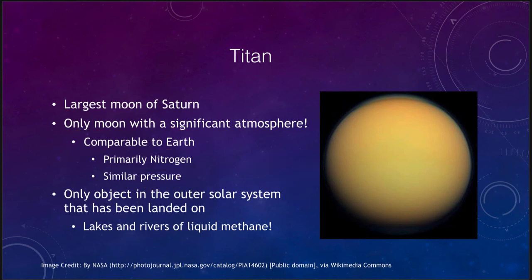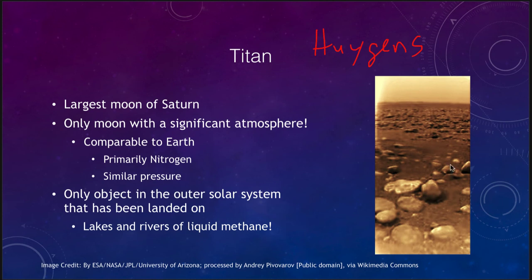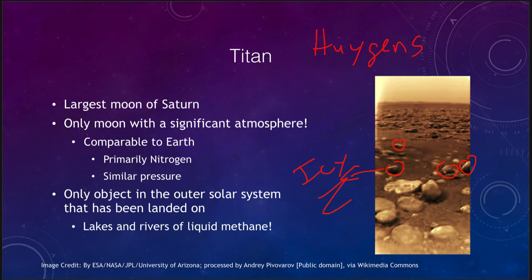Titan is the only object in the outer solar system on which we have ever landed. The Huygens lander, part of the Cassini mission — where Cassini orbited Saturn and Huygens actually landed on Titan — gave us surface details for about an hour and a half. Like Venus, Titan is constantly shrouded in clouds so we cannot see the surface directly. Images from the lander show rocks on the surface made up of blobs of icy materials, primarily water, frozen completely solid and behaving like rock does in the inner solar system.